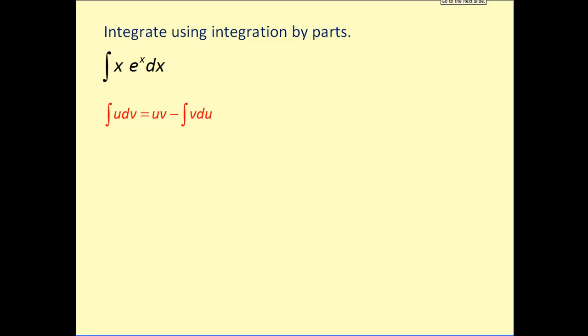Let's go ahead and give it a try. Here's our integration by parts formula. Here's our integral. So we have to choose a u. Let's let this part equal u since du would be pretty straightforward, which leaves the remaining part e to the x dx as our dv.